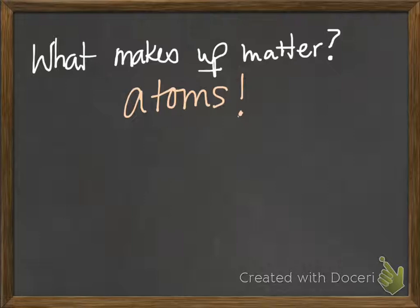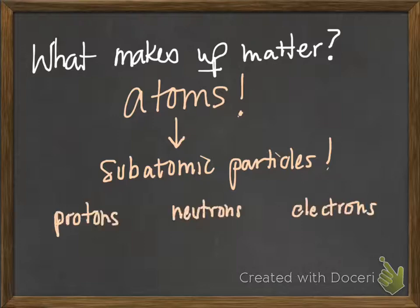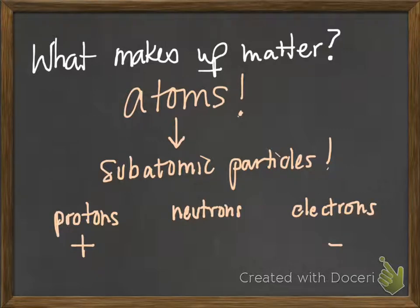What makes up all atoms? Subatomic particles, of course — sub, meaning below the level of, atomic — things that are smaller than an individual atom. There are three subatomic particles, and they're very important. You probably already know them. Protons, neutrons, and electrons. Protons have a positive charge and reside in the nucleus. Neutrons have no charge — they're neutral electrically — and they also reside in the nucleus. And electrons have a negative charge and reside outside the nucleus, orbiting in a dense region of space called the electron cloud.